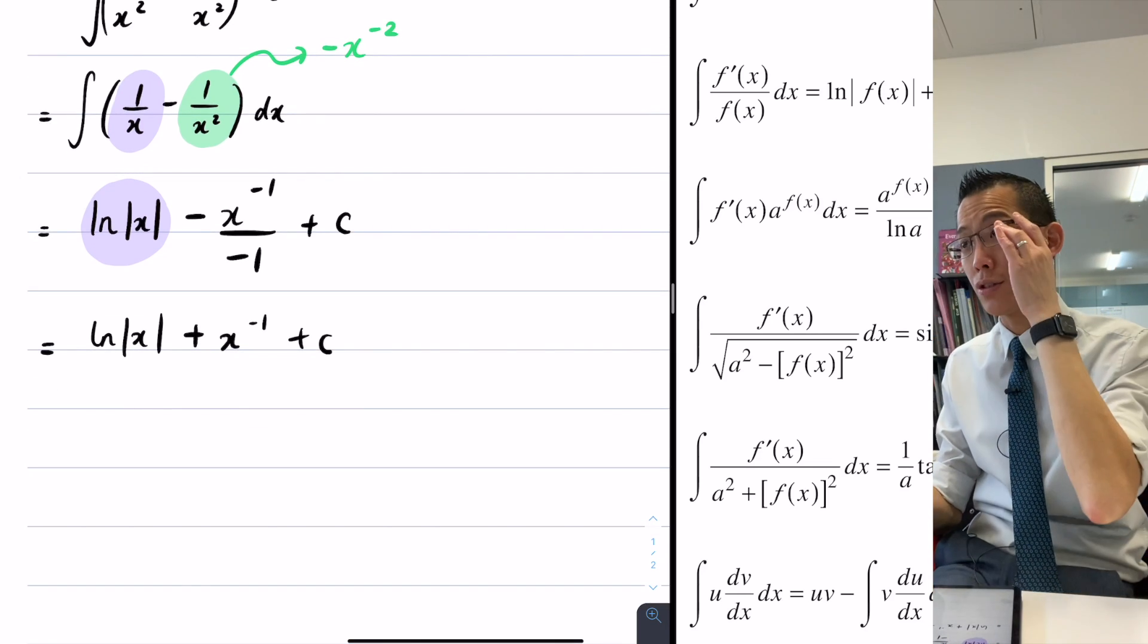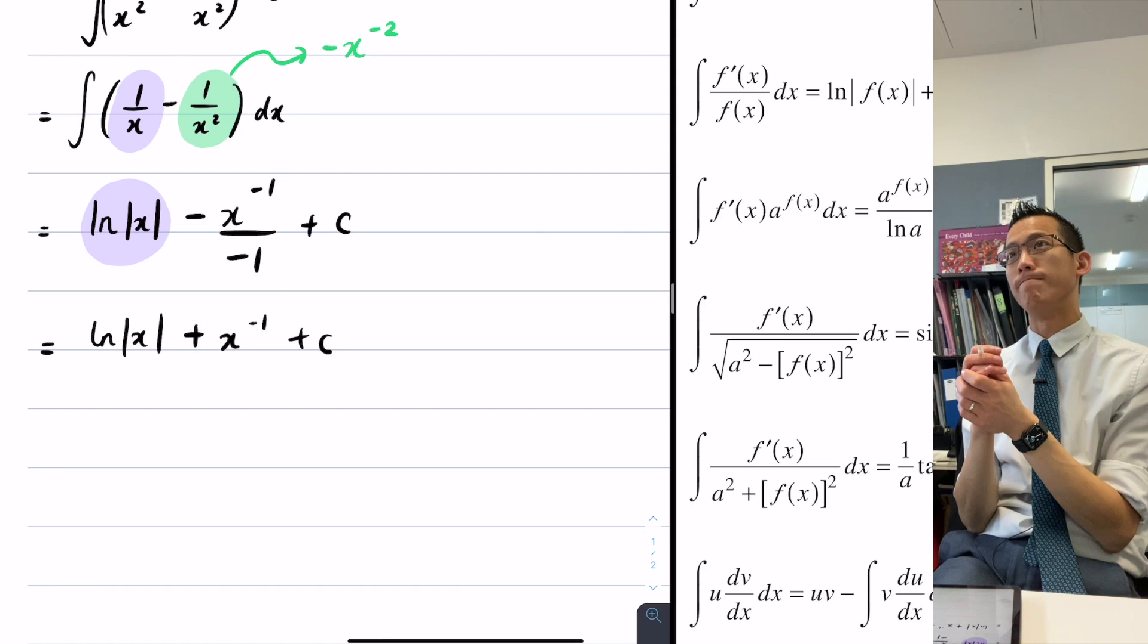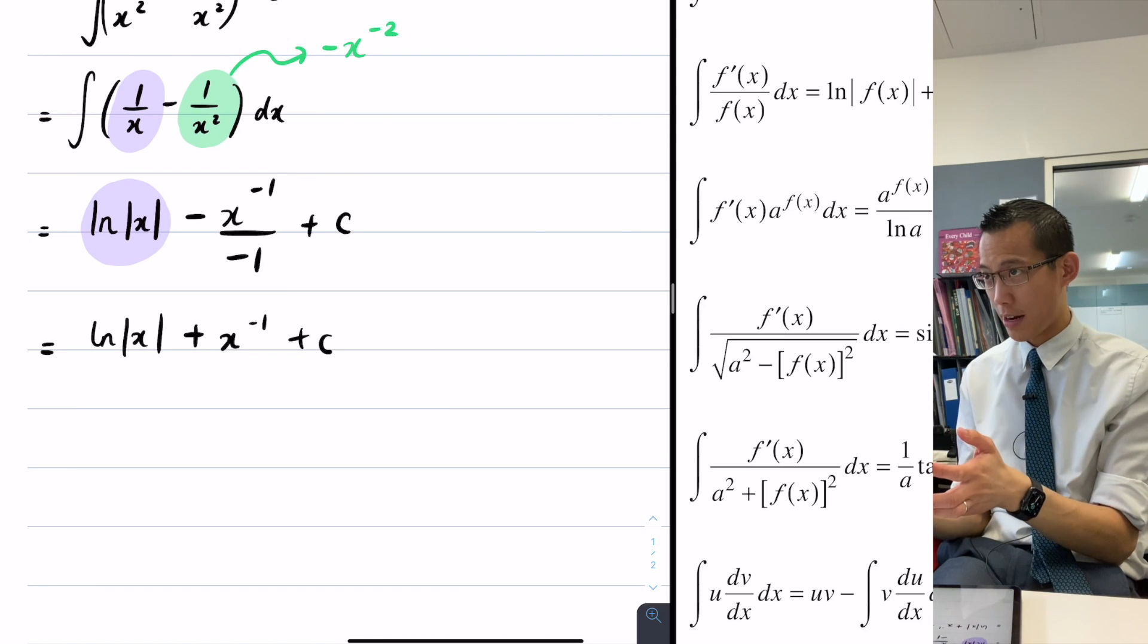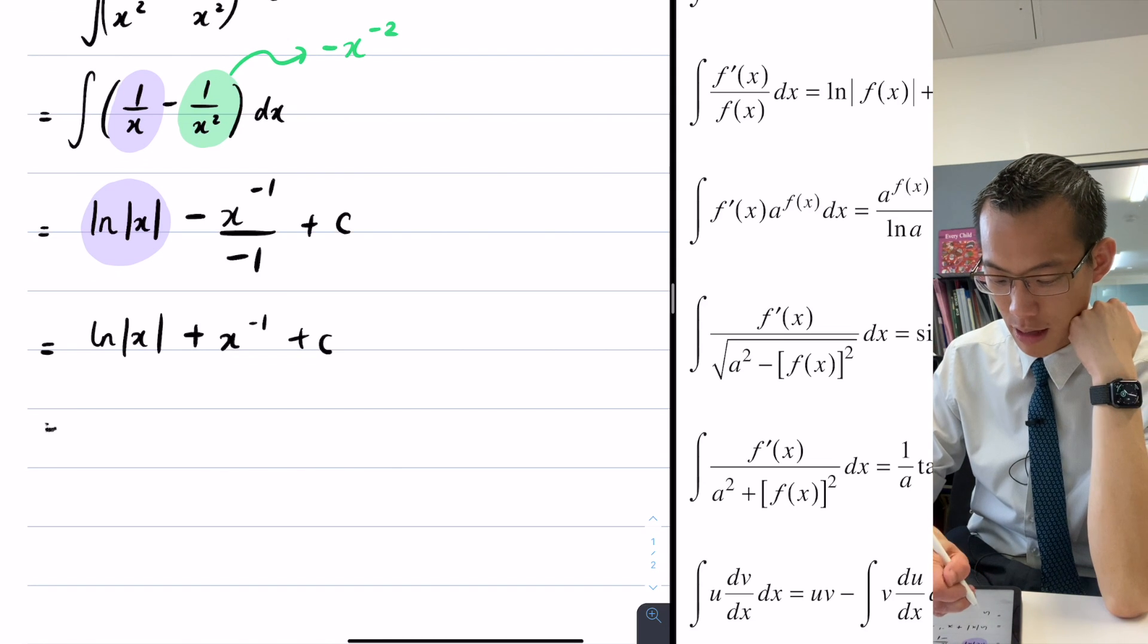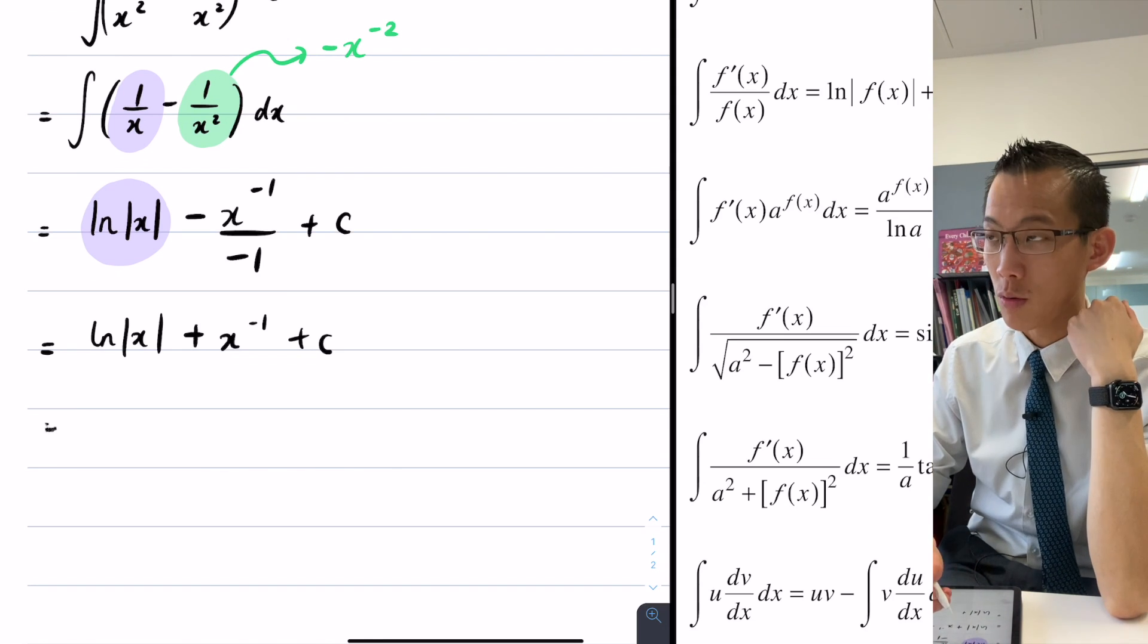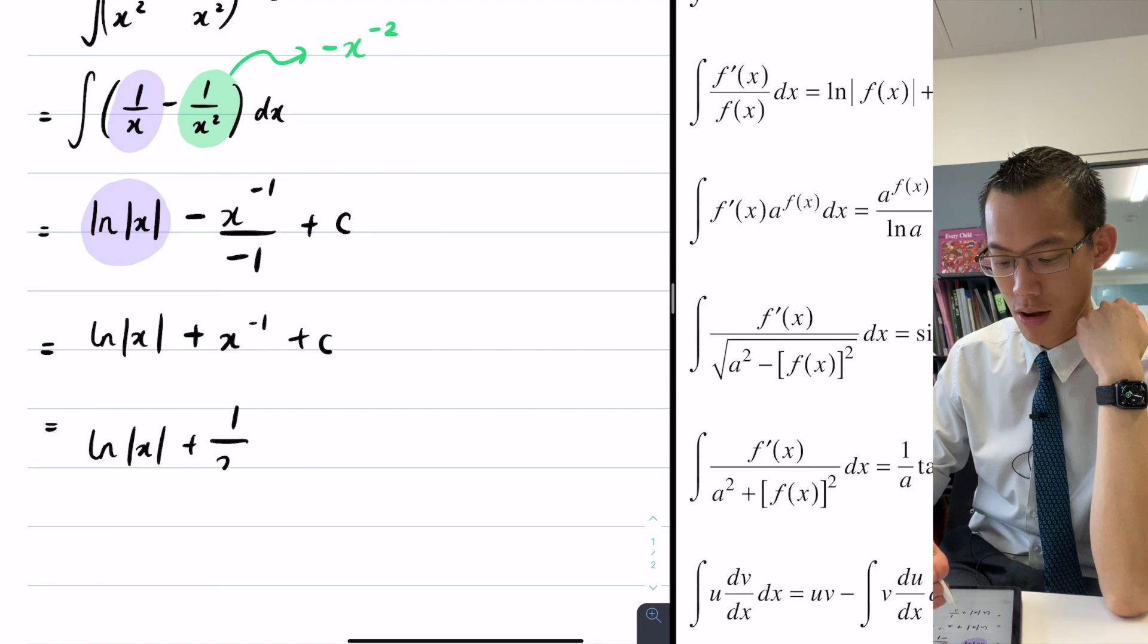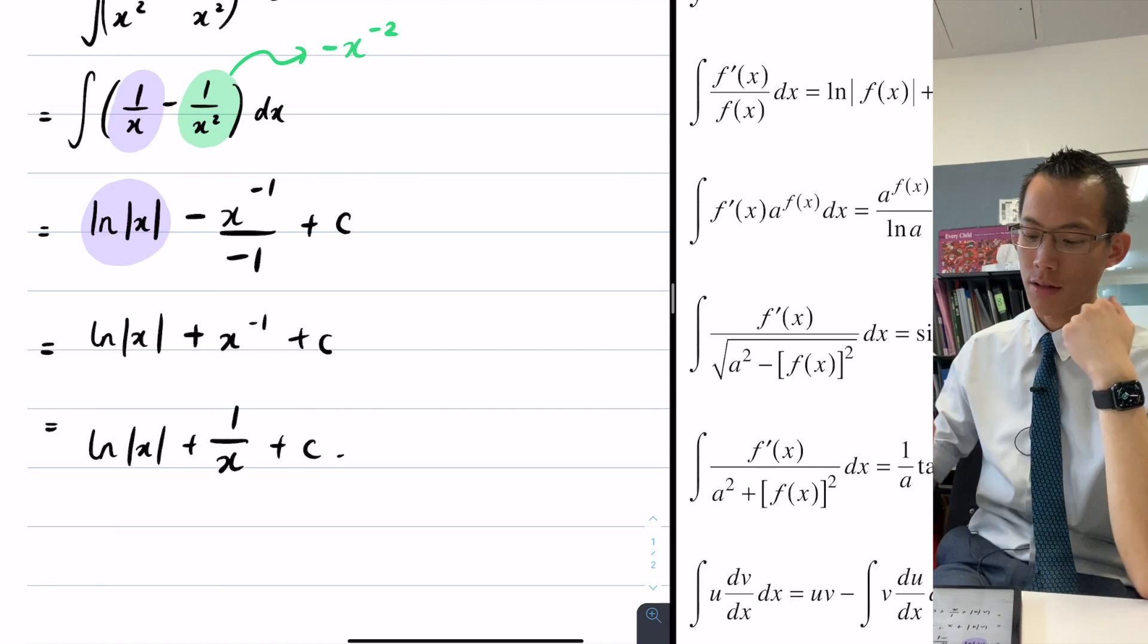And then I'm like, well, I introduced these negative indices to make it easier to integrate. But I'm done with the integration now. So I'm going to get rid of those negative indices that I introduced. So that log is there, and I'll write that as 1 over x, plus a constant.